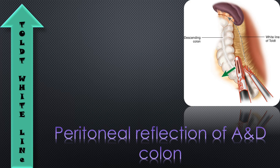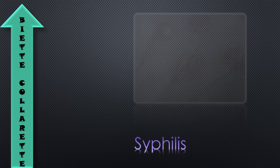The next one is the collarette sign. This sign is seen in syphilis. Here we can see that a thin white ring of scales is over the surface of this lesion. That ring is known as the collarette sign.